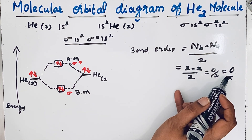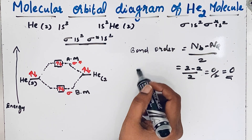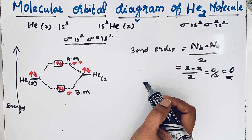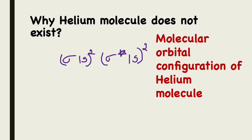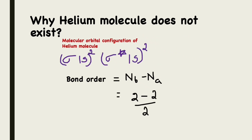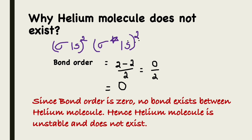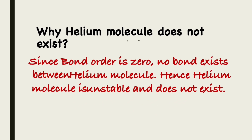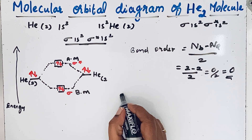Since the bond order is 0, it represents that there is no bond formation in the helium molecule. Therefore, the helium molecule is unstable and cannot exist. Thank you. Thanks for watching.